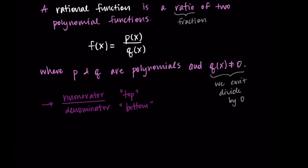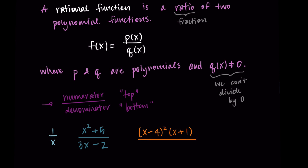A rational function is a polynomial divided by a polynomial. This could look as simple as one over x, where one and x are both polynomials. Or we could have x squared plus 5 over 3x minus 2. We could also have something in factored form, like x minus 4 squared times x plus 1, all divided by x minus 3 times x plus 1 times x plus 2. Another example is x to the fifth minus x divided by x to the sixth minus 3x squared plus 9.